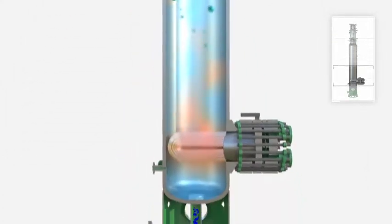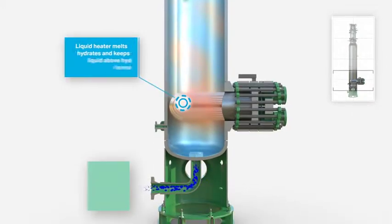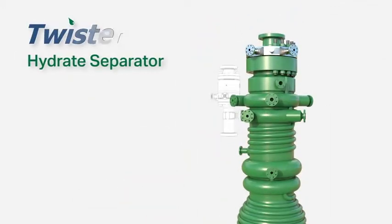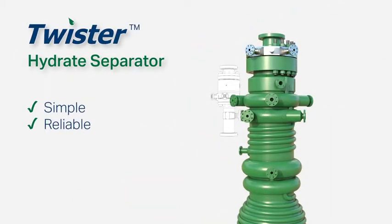Hydrate crystals form on the wall of the liquid compartment and traverse down the chamber. The liquid is heated to melt the hydrates. The Twister hydrate separator is a simple and reliable system enabling chemical free processing and high separating efficiency.